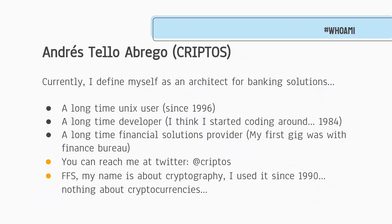My name is André Stelio-Abrego. I currently define myself as an architect for banking solutions. I've been a Linux user for a very long time, and I've been involved with the financial sector for a very long time. You can reach me on Twitter using my tag name, Cryptos. The name Cryptos has nothing to do with cryptocurrencies — I started using it a very long time ago; it was about cryptography. Back in those days, there was just the beginning of OpenSSH 1 and all that stuff, and it was fascinating for me.